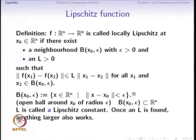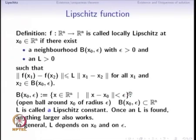We are using an open ball, which means that the distance of every point in that ball is strictly less than epsilon from the center x0. That is why it is called an open ball. L is called a Lipschitz constant. Once an L is found, anything larger can also be used and the inequality will still be satisfied. In general, L depends on both x0 and on epsilon.